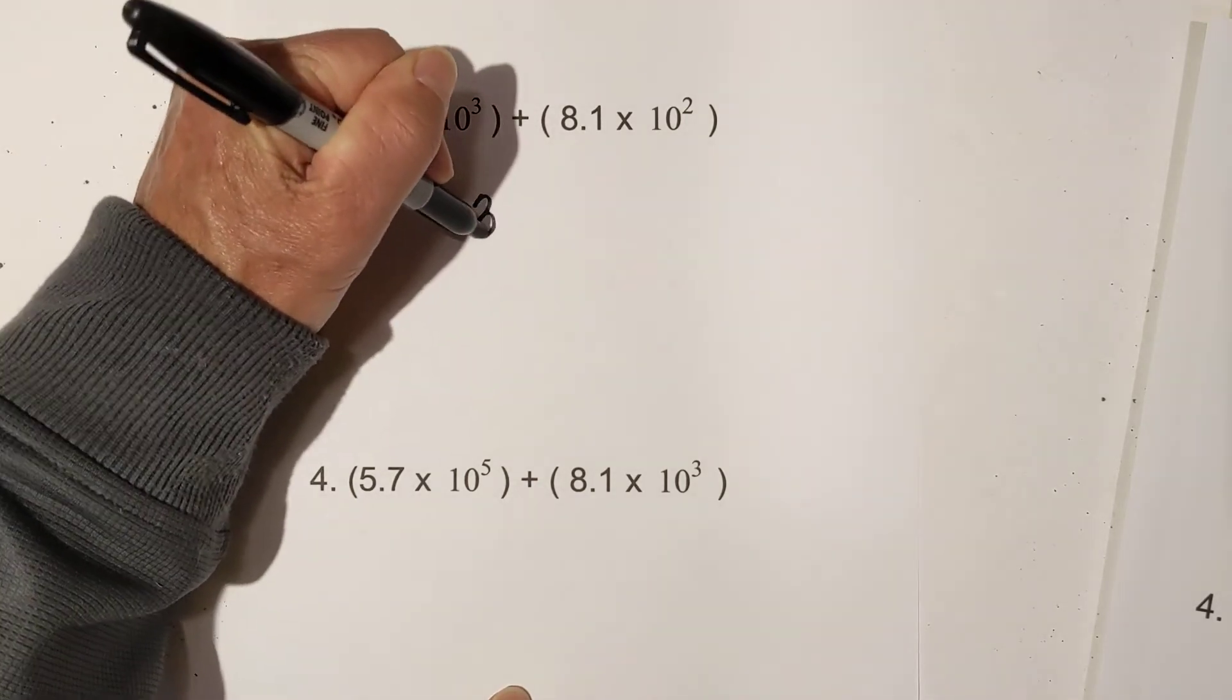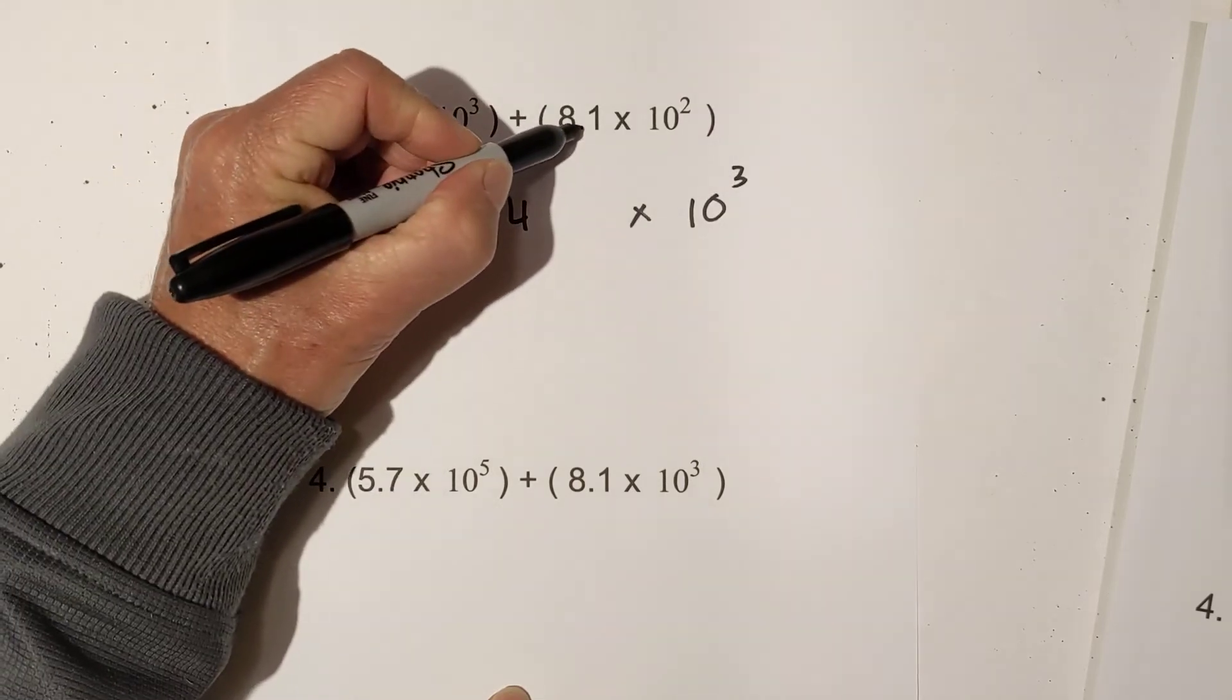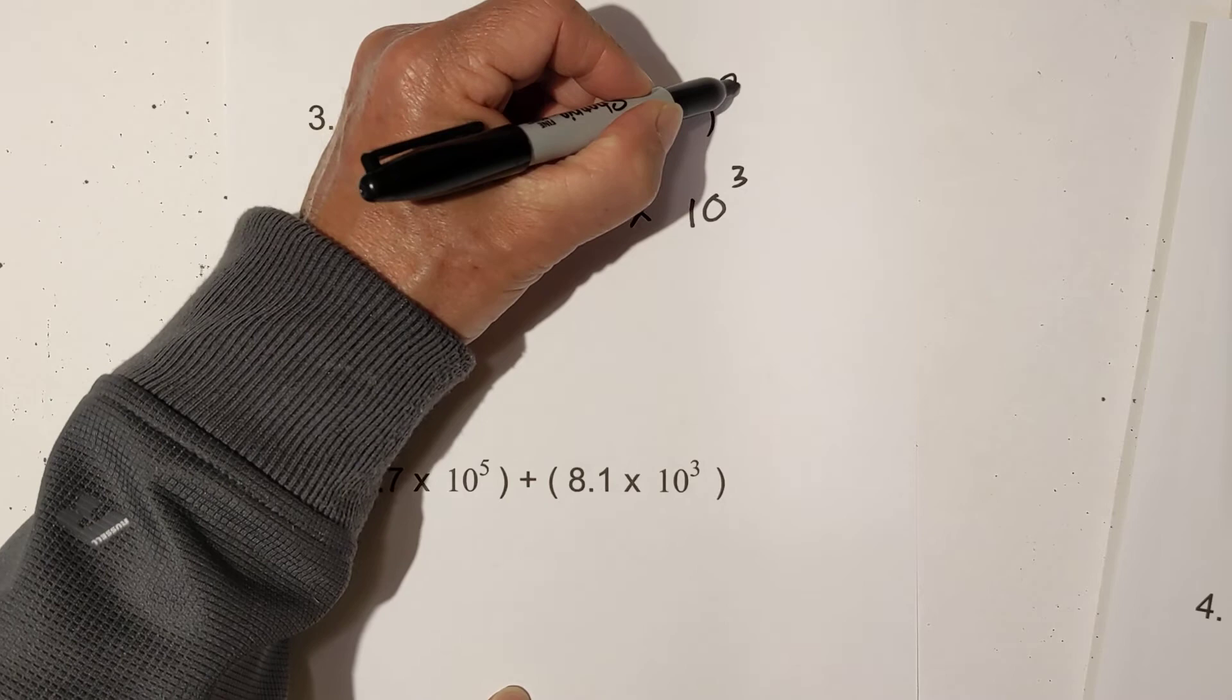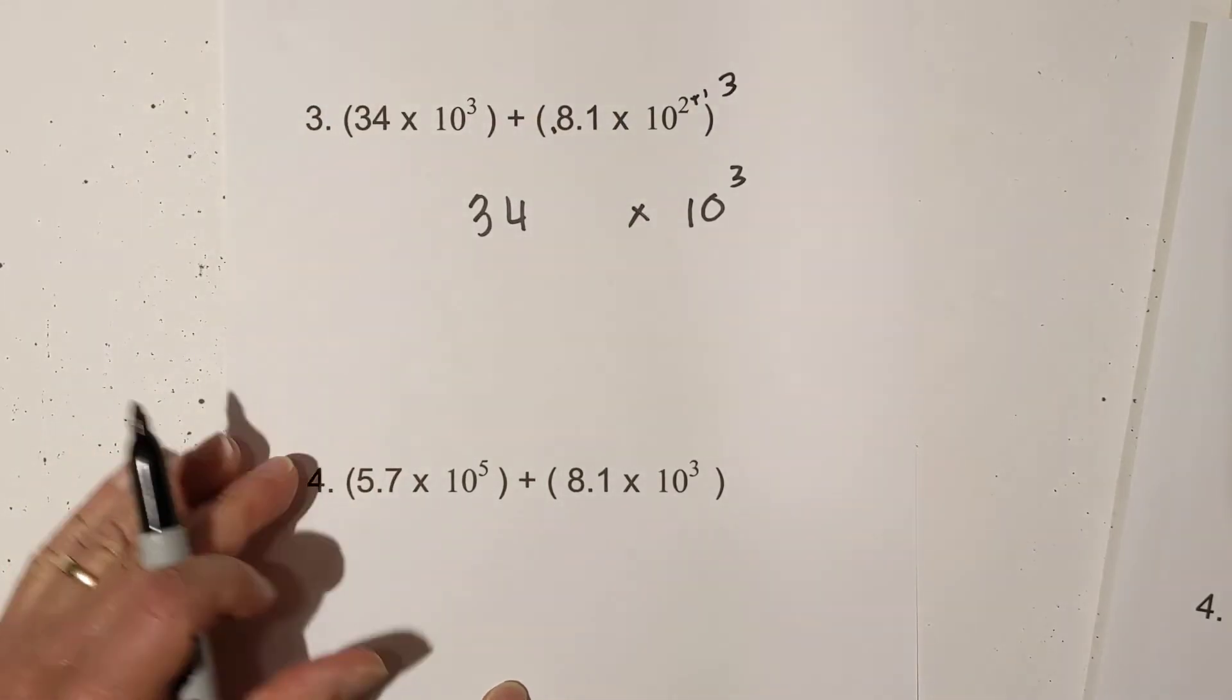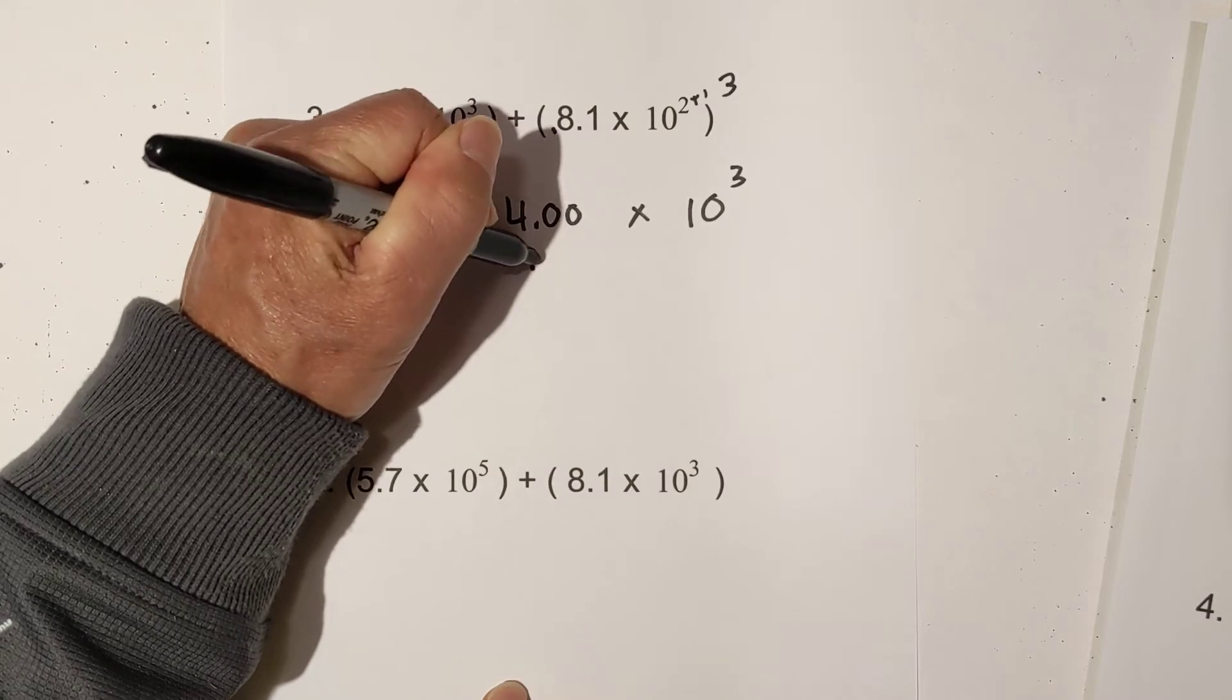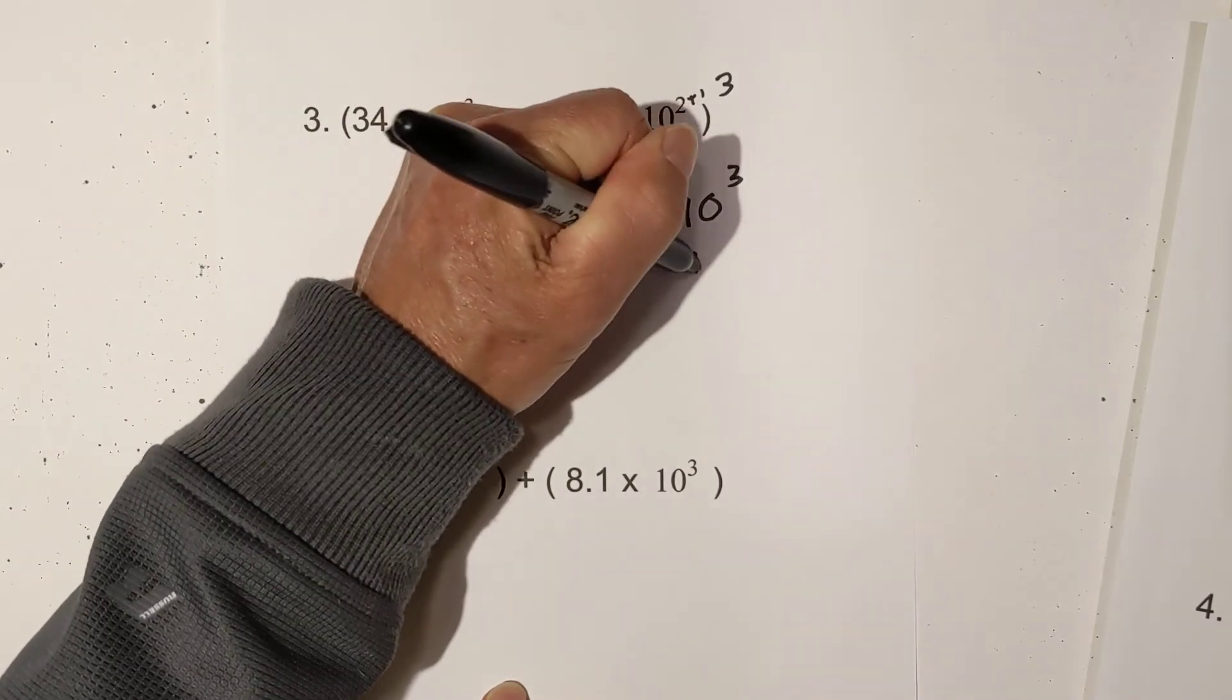So let's go ahead and do that. I'm going to write 34 times 10 to the third. I'm going to move the decimal one place to the left, which means I can add 1. So that will become to the third. So this is 0.81 and I put this right here.